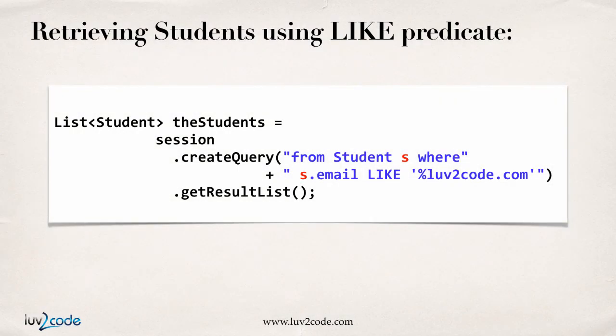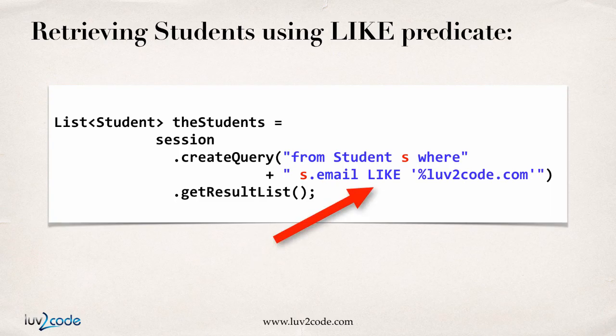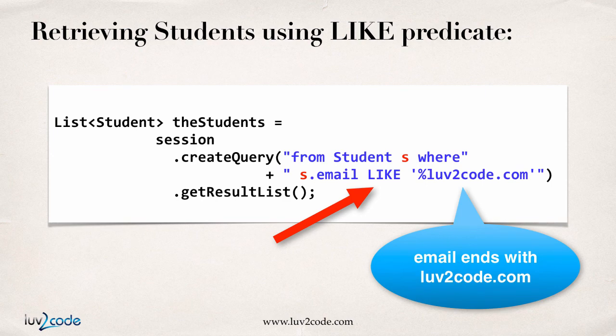You can also make use of a like predicate. In this example, I want to get a list of all students whose email address ends in love2code.com. We use the like predicate along with the percent wildcard — so 'S.email like %love2code.com'. That gives you all students whose email address ends in love2code.com.